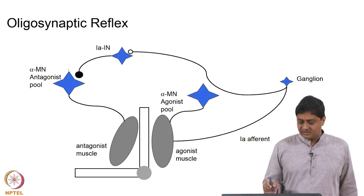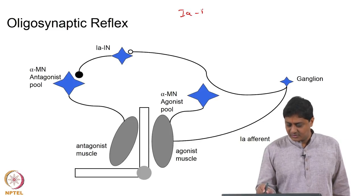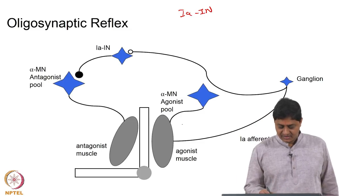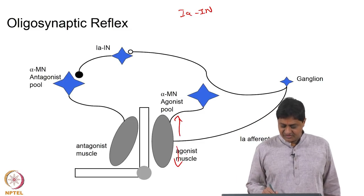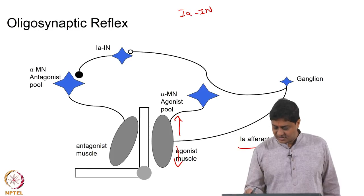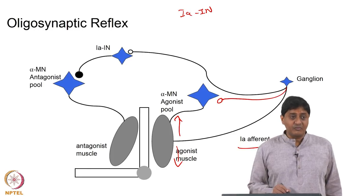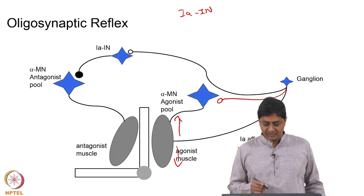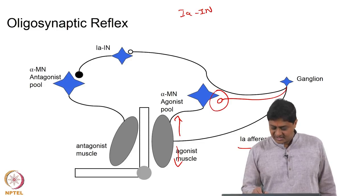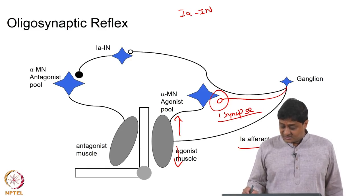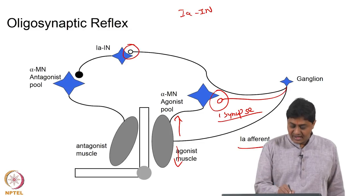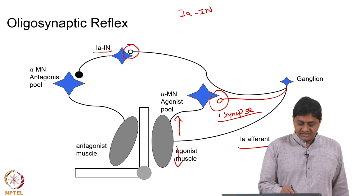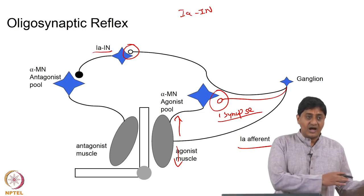The classic example of the oligosynaptic reflex involves the 1A interneuron. To remind ourselves: if this muscle is stretching, the 1A afferent activates the alpha motor neuron of the same muscle so it will contract — that is one form of negative feedback, and it is a monosynaptic loop. But the 1A afferent also excites a 1A interneuron which inhibits the alpha motor neuron of the antagonist muscle.